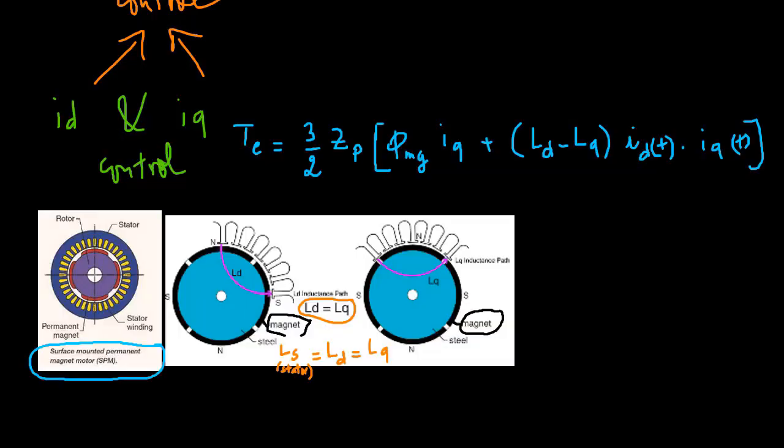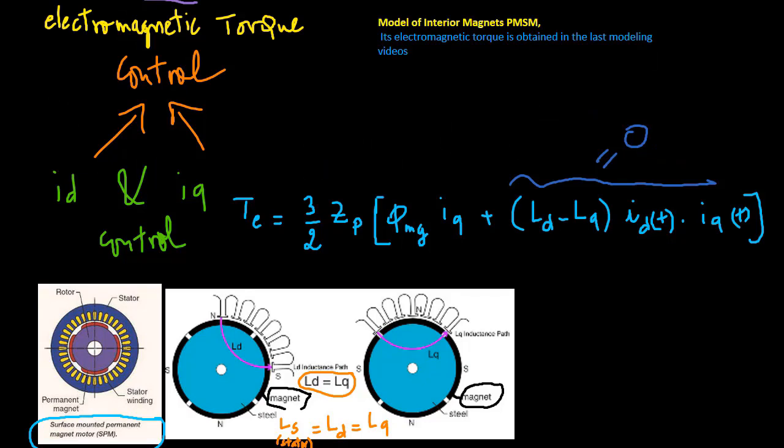The surface mounted PMSM, the inductors Ld and Lq are identical, so that the second term from the dynamic structure of the PMSM becomes zero. The relationship between electromagnetic torque and q-axis current for a surface mounted PMSM is therefore linear.